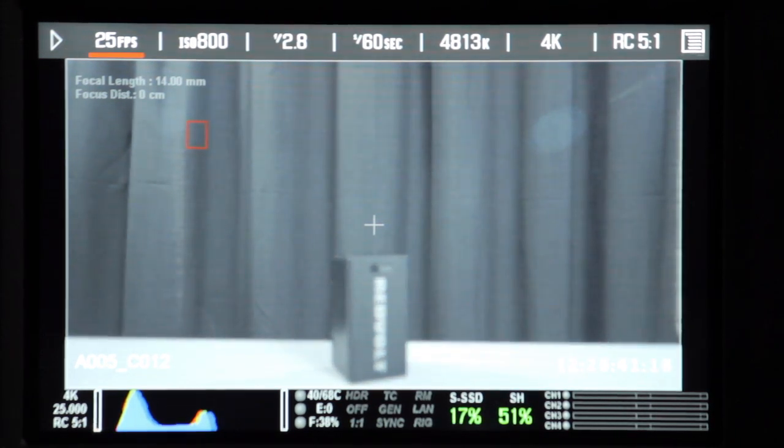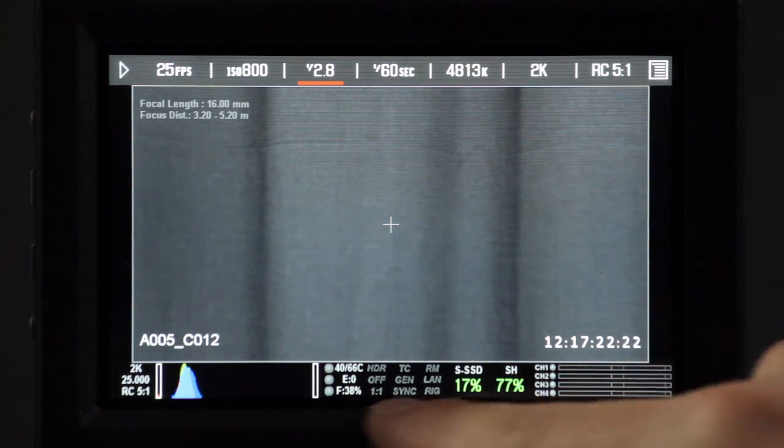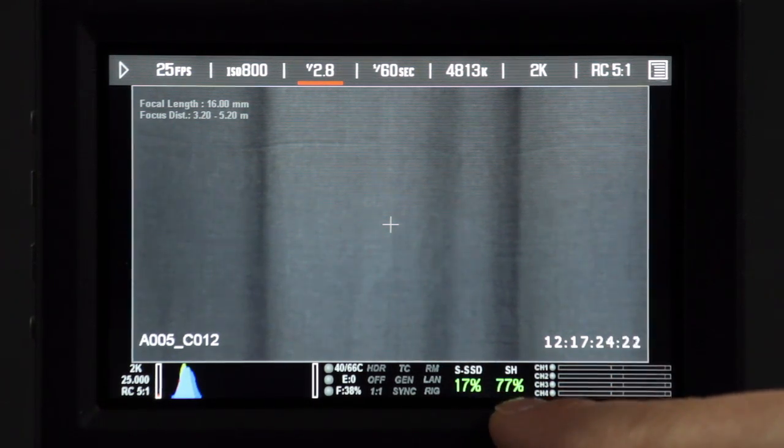At the bottom there is a histogram that represents your exposure. On the right there is more information that displays values such as battery level or card space.